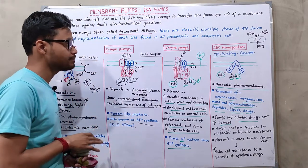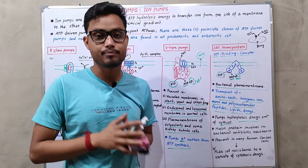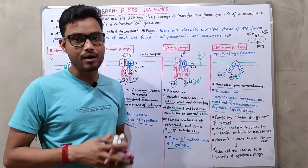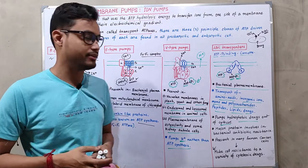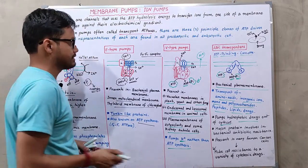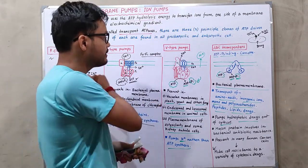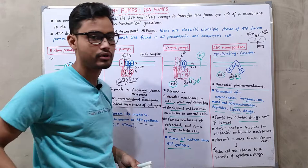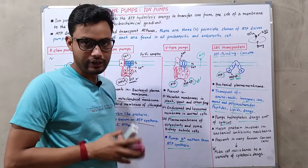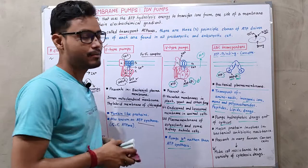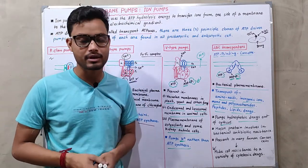In summary, there are four basic types of ion pumps present in the plasma membranes of various eukaryotes and prokaryotes. F-type pumps generate ATP, while the other three — P-type, V-type, and ABC transporters — use ATP hydrolysis for their function. Thanks for watching; please like and subscribe.